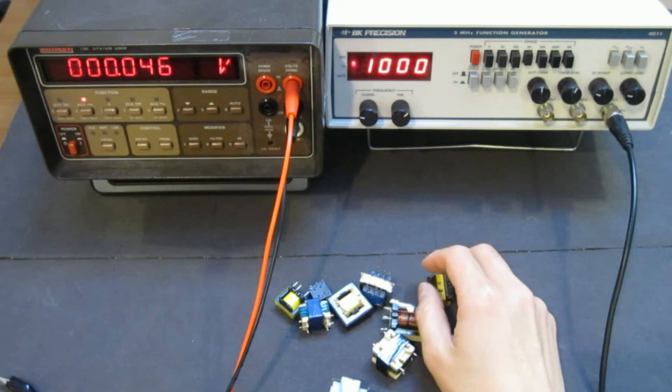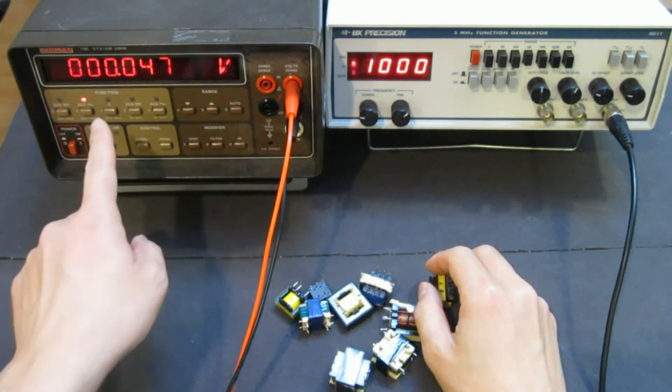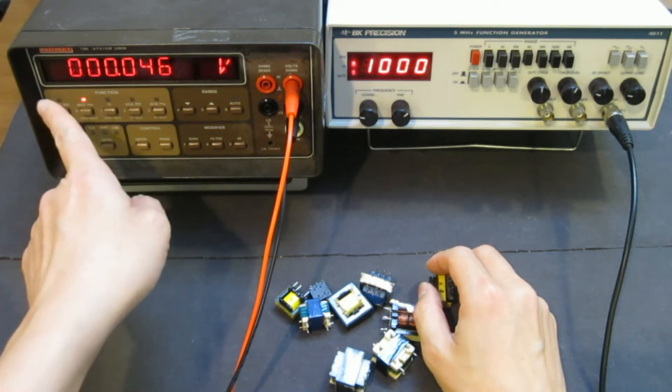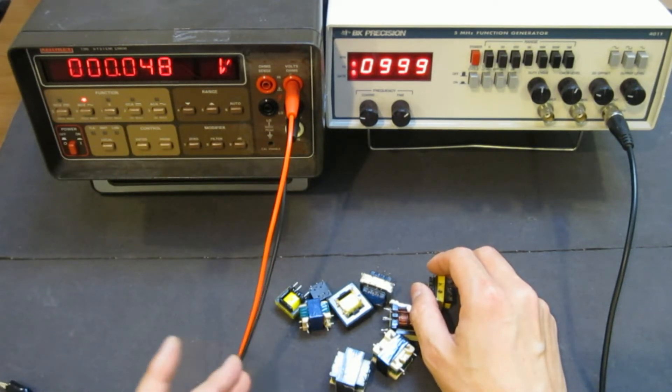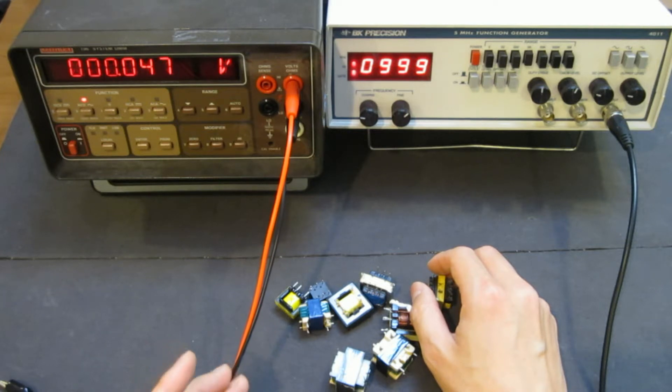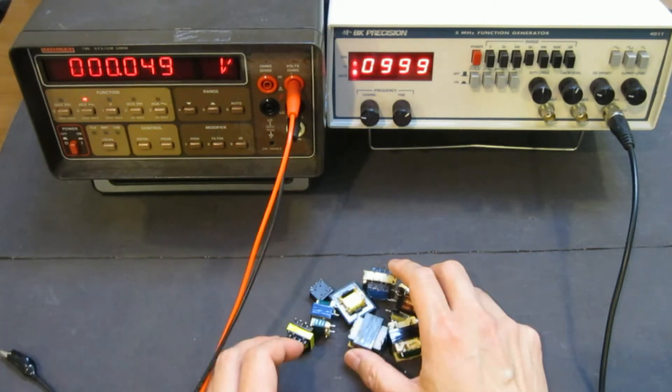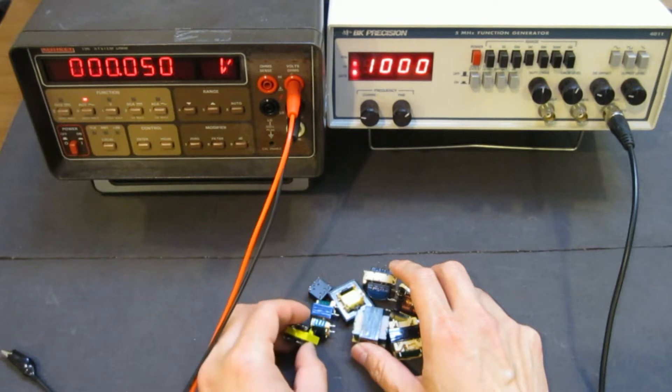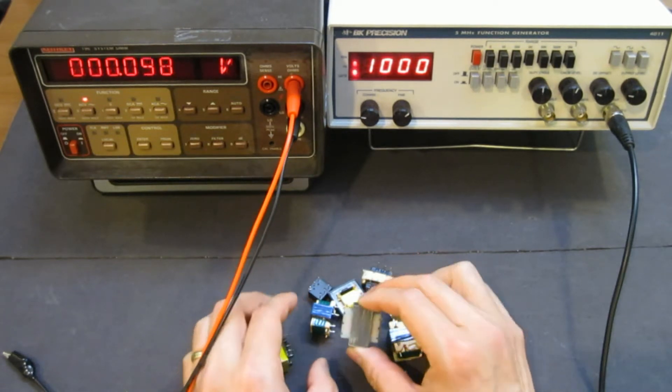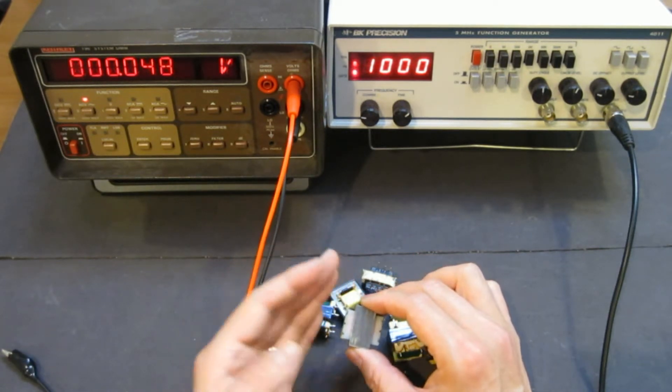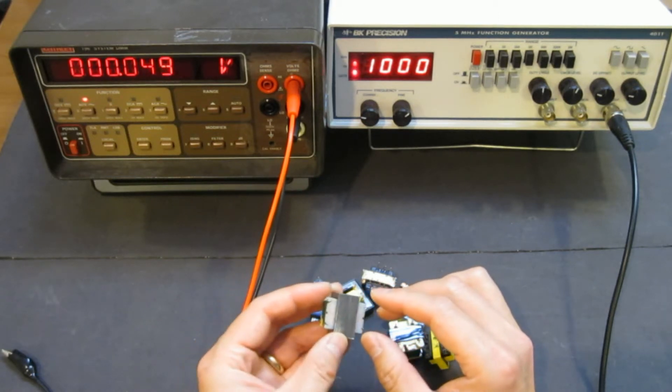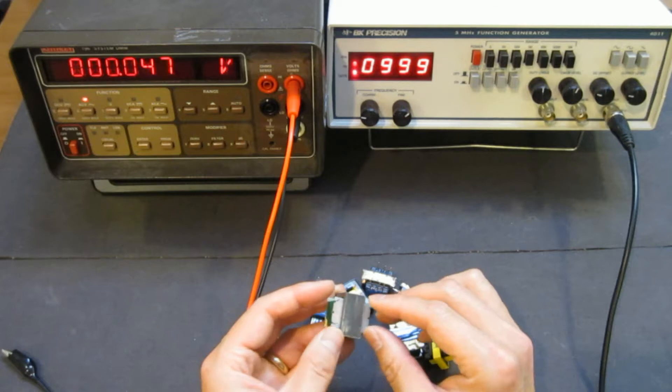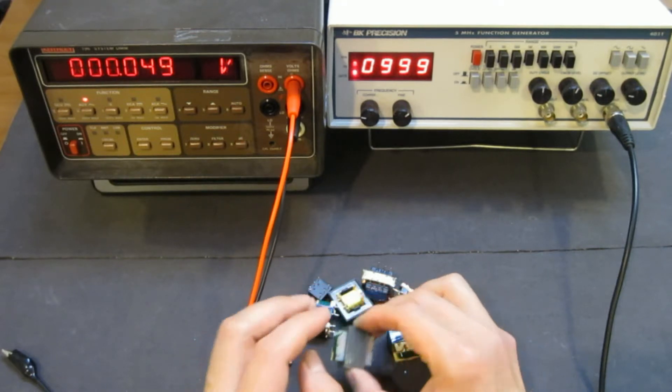Before I get started, let's take a look at the setup here. On the left, I have a Keithley 196 DMM. And the reason I'm using this DMM is because it has a very wide frequency response range from DC all the way up to 100 kilohertz. If you are not too concerned about reading the voltage accurately, you can just use any multimeters you have. It doesn't really matter, especially if you are just concerned about the ratio between input and output.